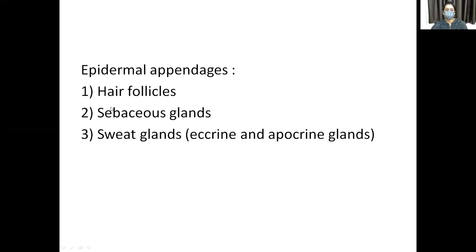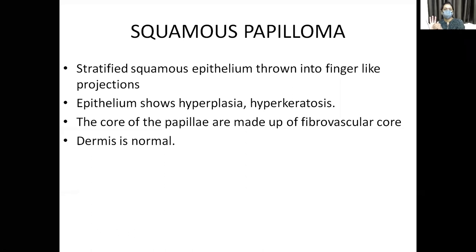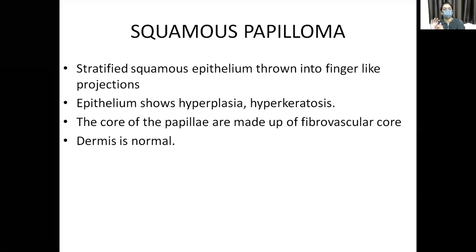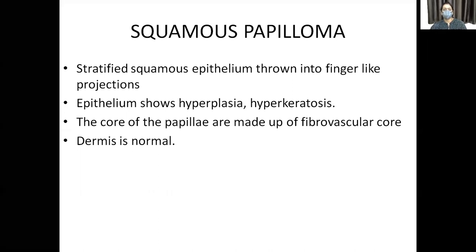The epidermal appendages include hair follicles, sebaceous glands, and sweat glands (eccrine and apocrine). There is also another layer called the stratum lucidum, present in the palms and soles — a thin clear layer of dead cells, different from the other four standard epidermal layers.